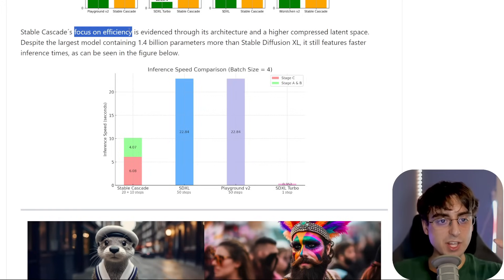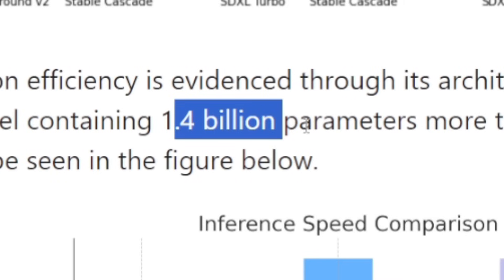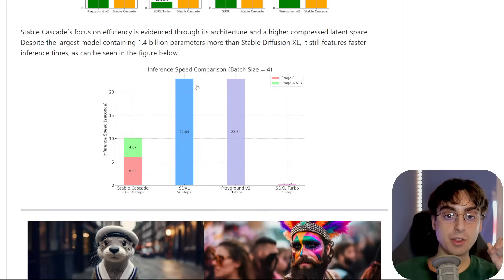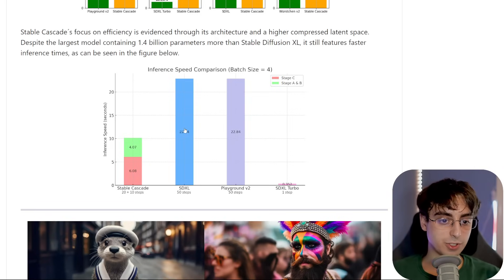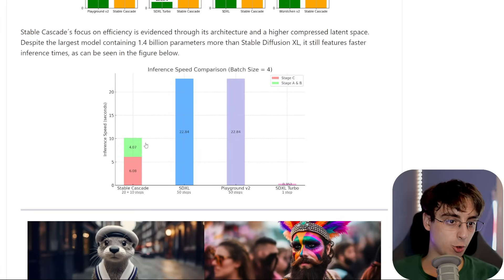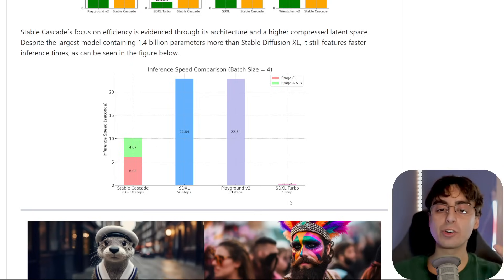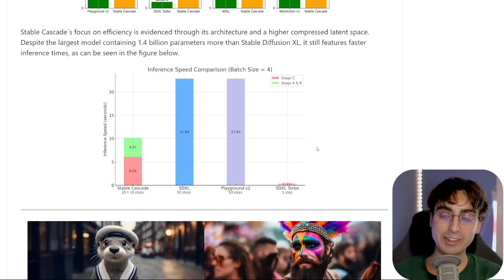This is really focused on efficiency. Despite the largest Stable Cascade model featuring 1.4 billion more parameters than Stable Diffusion XL, it still features faster inference times. This model is larger than SDXL, better looking than SDXL, and roughly twice as fast — SDXL at 50 steps takes 22 seconds, cut down to around 10 seconds with Stable Cascade. You won't beat SDXL Turbo's one-step generation, but the quality is orders of magnitude better while still being twice as fast.